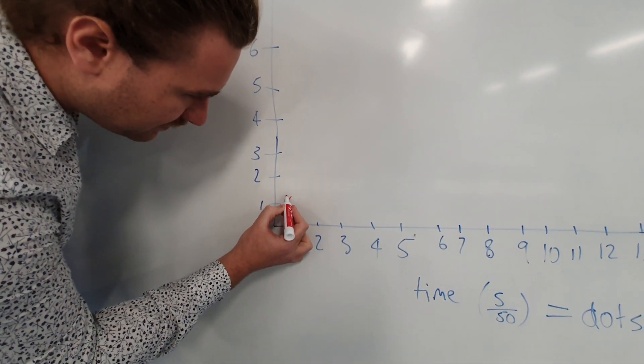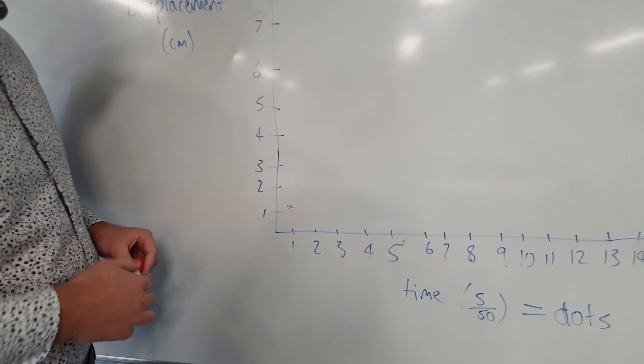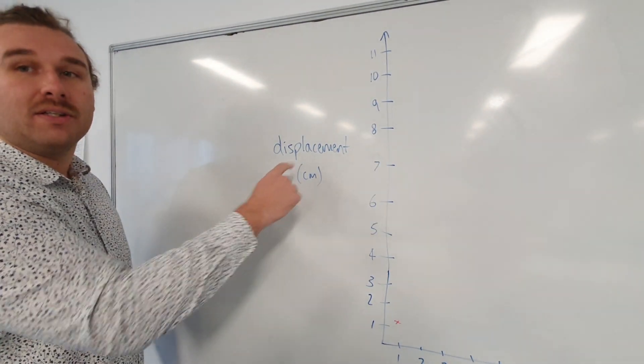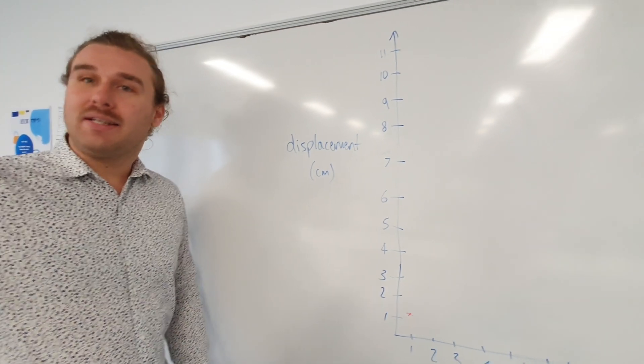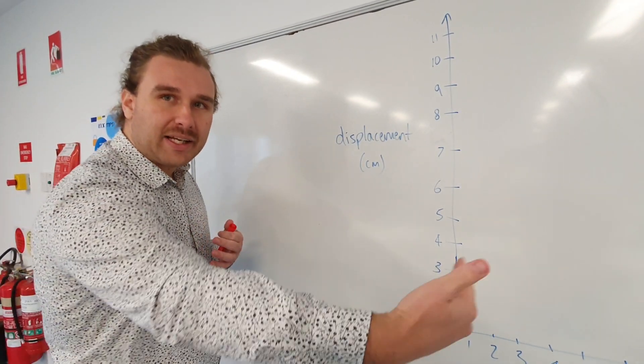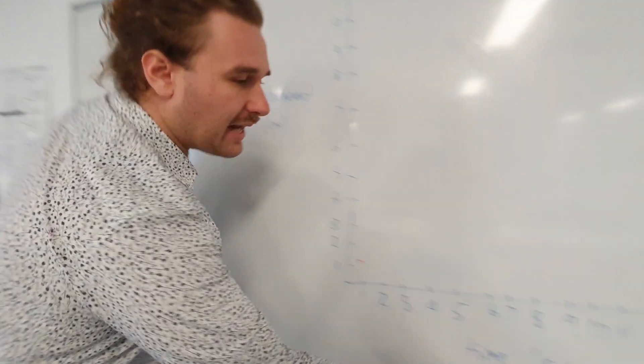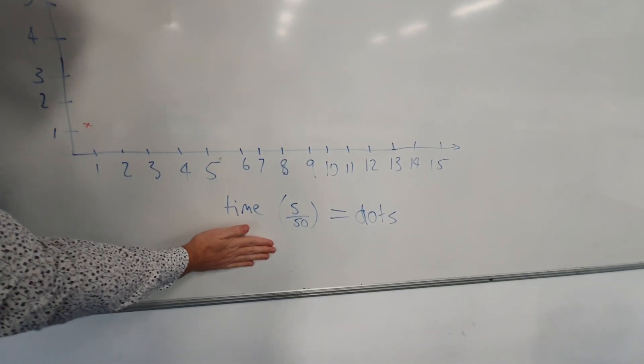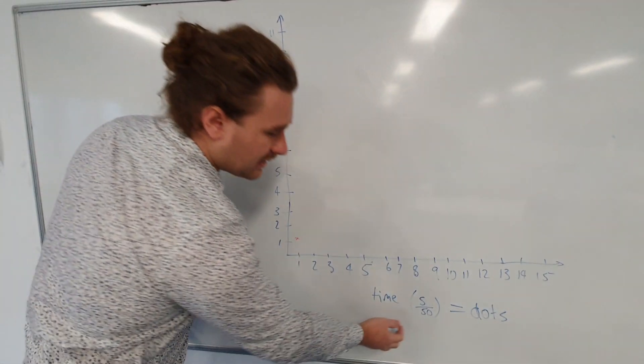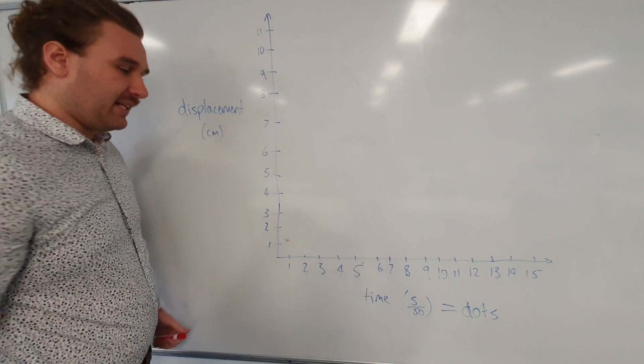1.1 for the first dot. And you can see here on my axes, I have displacement. This is what we're talking about. And in this case, displacement and distance are basically going to be the same thing because we're just traveling in a straight line. And down here is time, which I've called dots, because every single one of these dots is going to be 1/50th of a second.